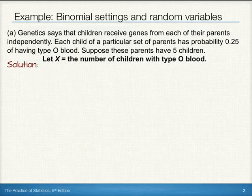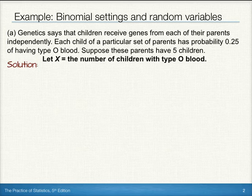Genetics says that children receive genes from each of their parents independently. Each child of a particular set of parents has a probability of 0.25 of having type O blood. Suppose these parents have five children. Let's let x equal the number of children with type O blood.